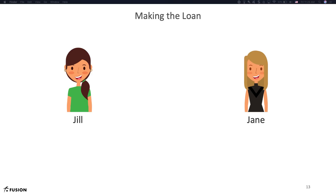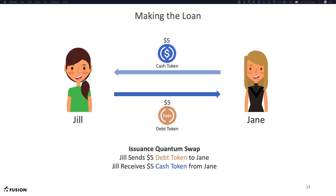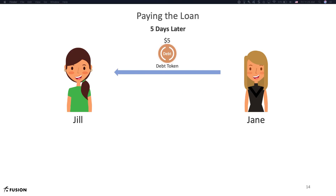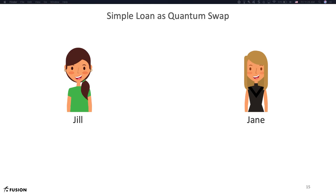In our first example, where there is no interest, Jill gives five dollars of debt token to Jane in return for five dollars of cash token from Jane. This exchange is represented as a quantum swap of five dollars debt token for five dollars cash token on day one. After five days, Jane shows up with five dollars of debt token and Jill must honor her debt and give back the five dollars of cash token. This exchange is another quantum swap. So a loan can be fully modeled with just two quantum swaps.